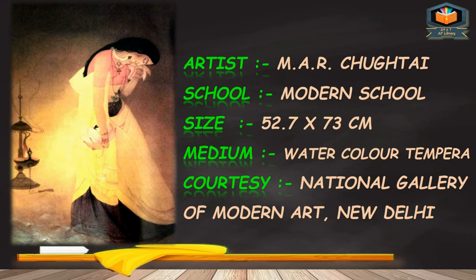This is a painting of Radhika. The artist is M.A. Chughtai, school is Modern School. The size is 52.7 centimeters wide and 73 centimeters long. The medium is watercolor on dampra. Courtesy: National Gallery of Modern Art, New Delhi.